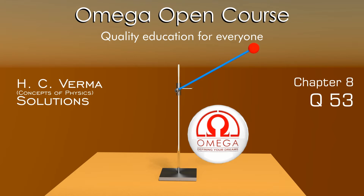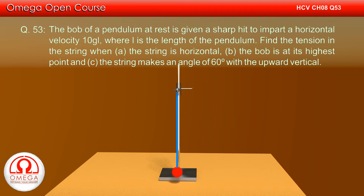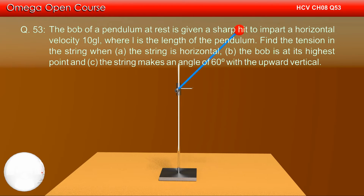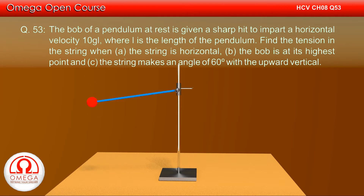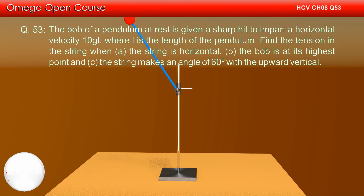H.C. Varma Chapter 8, Question No. 53. The bob of a pendulum at rest is given a sharp hit to impart a horizontal velocity of √(10gL), where L is the length of the pendulum. Find the tension in the string when: A) the string is horizontal, B) the bob is at the highest point, and C) the string makes an angle of 60 degrees with the upward vertical.